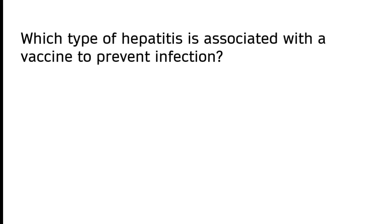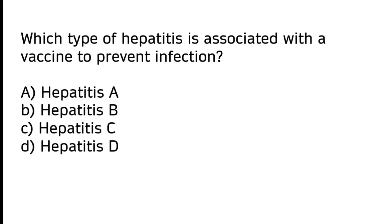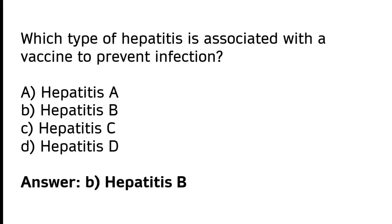Which type of hepatitis is associated with a vaccine to prevent infection? A) Hepatitis A, B) Hepatitis B, C) Hepatitis C, D) Hepatitis D. The correct answer is option B — hepatitis B is associated with a vaccine to prevent infection.